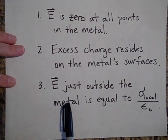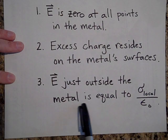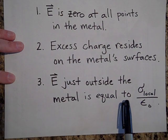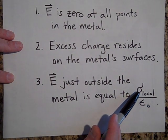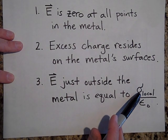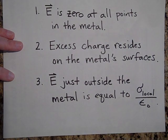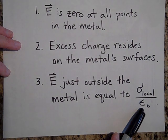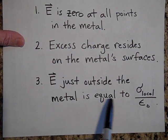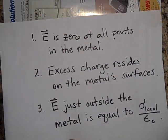Number three: the electric field just outside the metal will equal a very simple equation — sigma over epsilon naught. Sigma is the local charge per area, and epsilon naught is the same epsilon naught from Gauss's law. I will prove that using Gauss's law in a little bit.